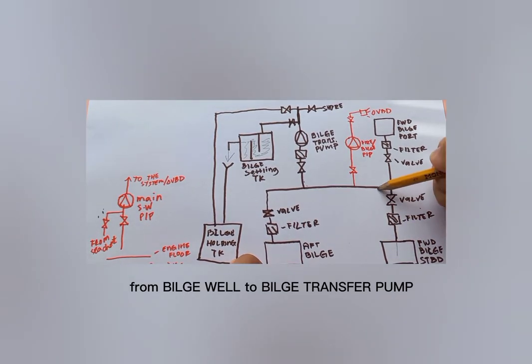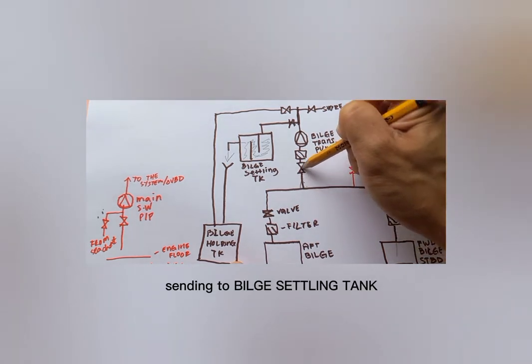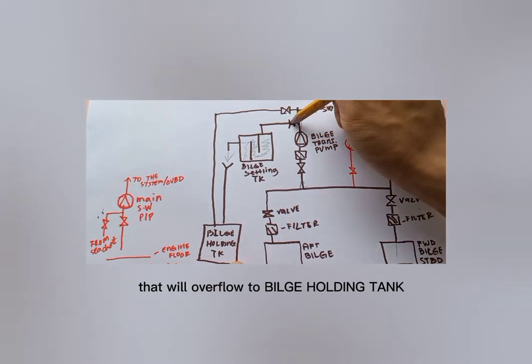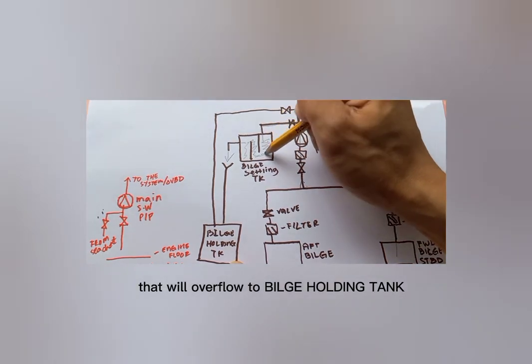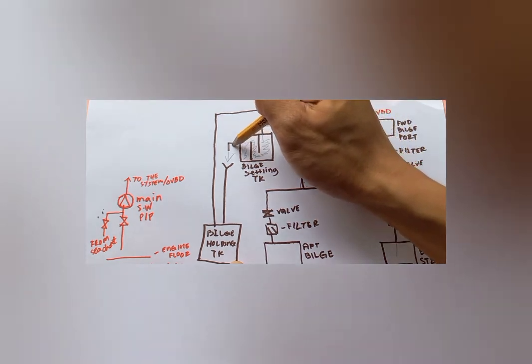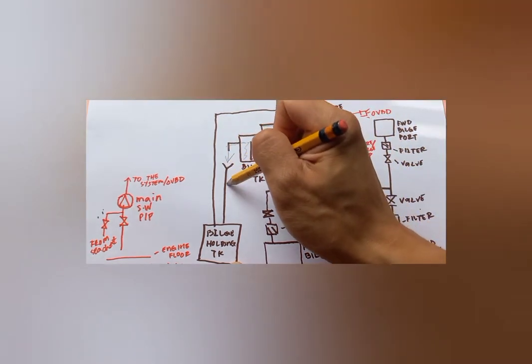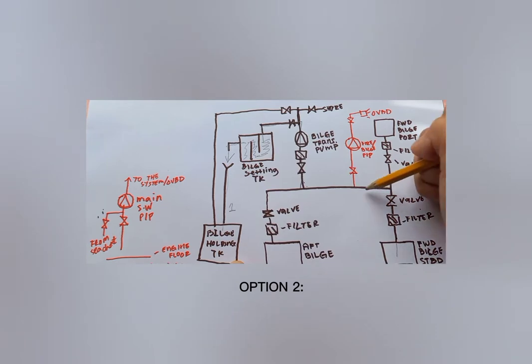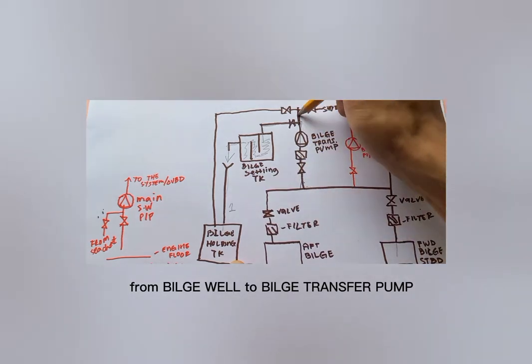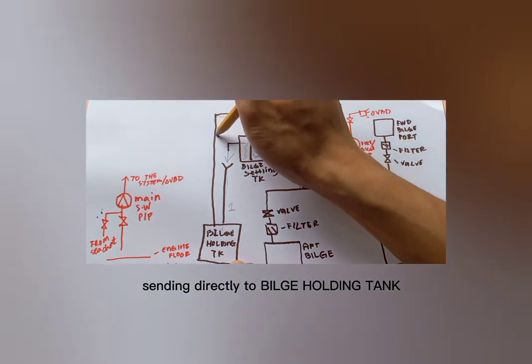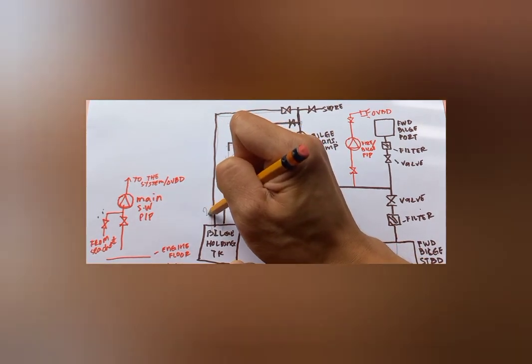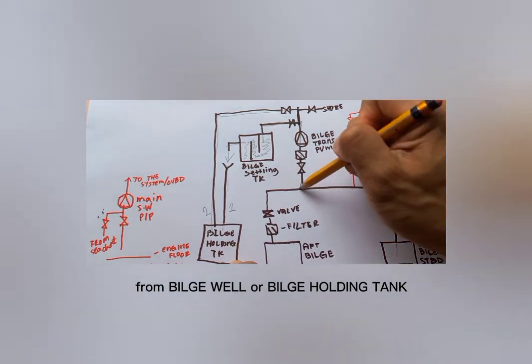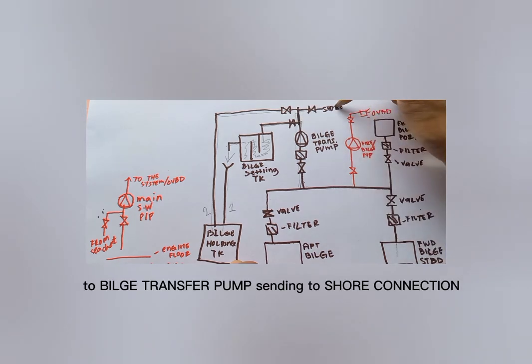Option one: from bulge well to bulge transfer pump sending to bulge settling tank that will overflow to bulge holding tank. Option two: from bulge well to bulge transfer pump sending directly to bulge holding tank. Option three: from bulge well or bulge holding tank to bulge transfer pump sending to shore connection.